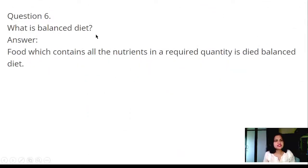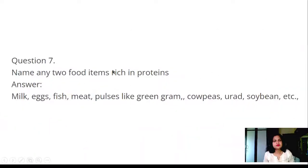Question 6: What is balanced diet? Answer: The food which contains all the nutrients in required quantity is balanced diet. Question 7: Name any two food items rich in proteins. Answer: Milk, eggs, fish, meat, pulses like green gram, cow peas, urad, soya bean, etc.